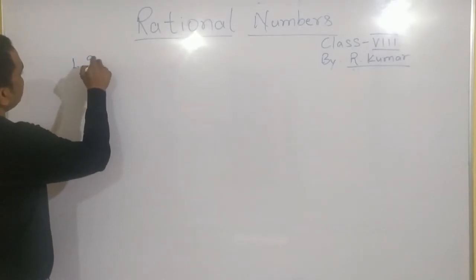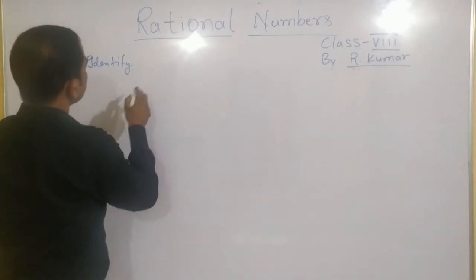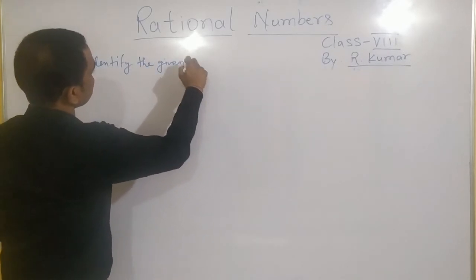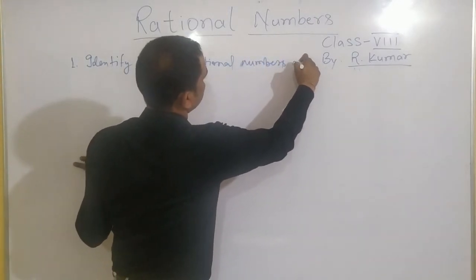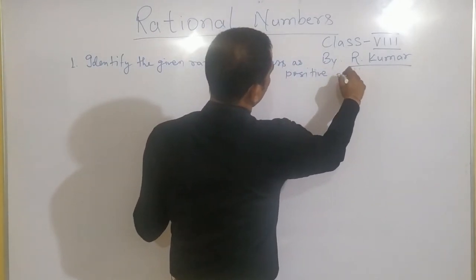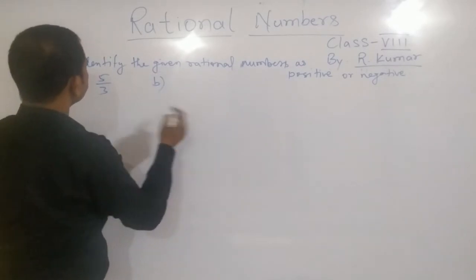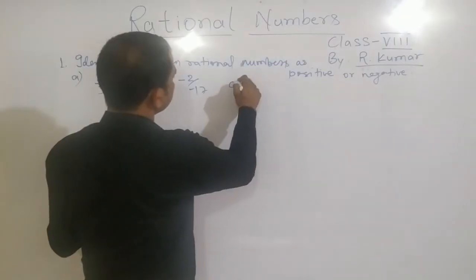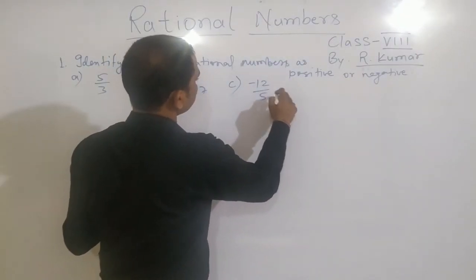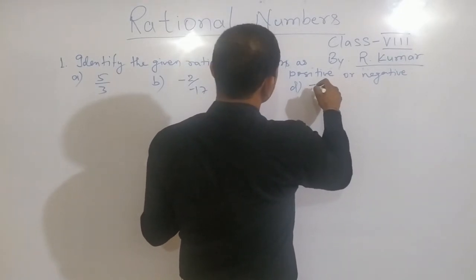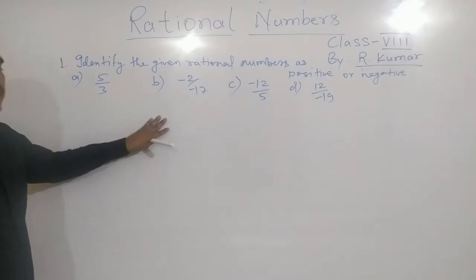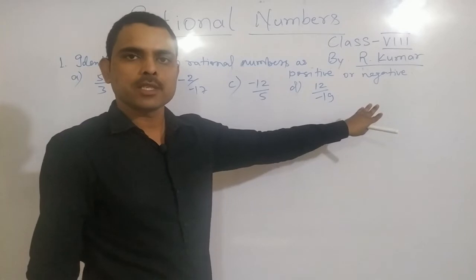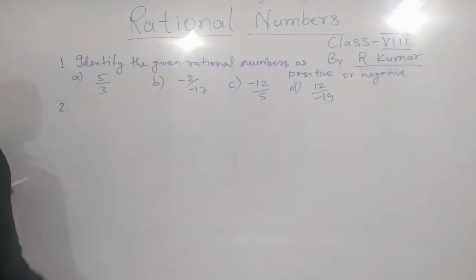The first question is, identify the given rational numbers as positive or negative. A, 5 by 3. B, minus 2 by minus 70. C, minus 12 by 5 and D, minus 12 by minus 19. These 4 are there. In these 4 you just have to identify which one is positive rational number and which one is negative rational number.